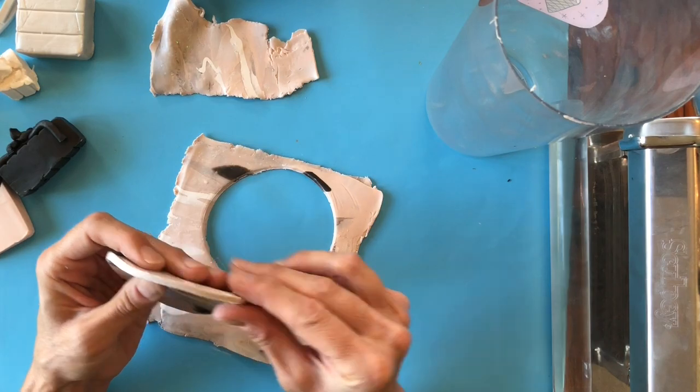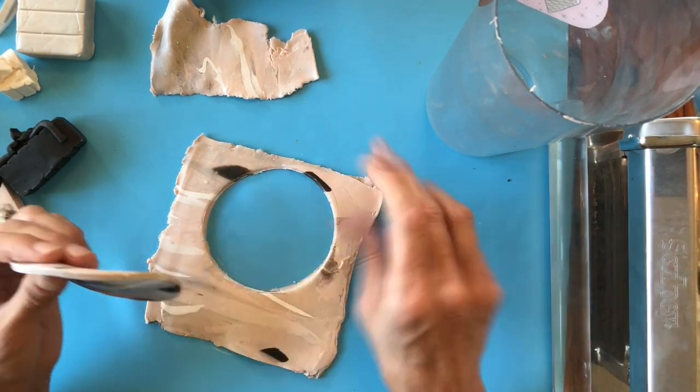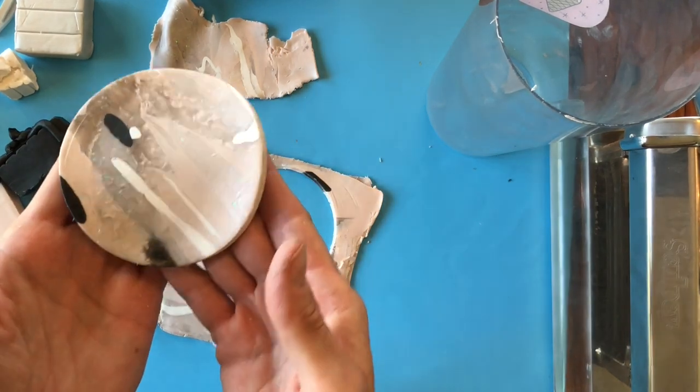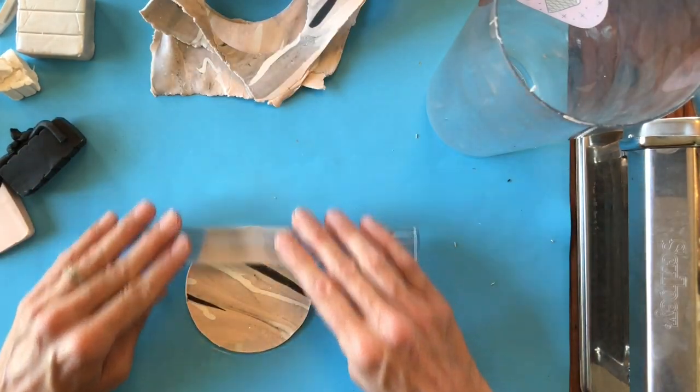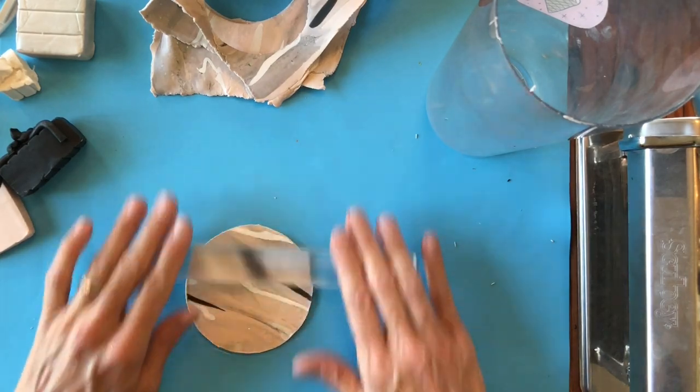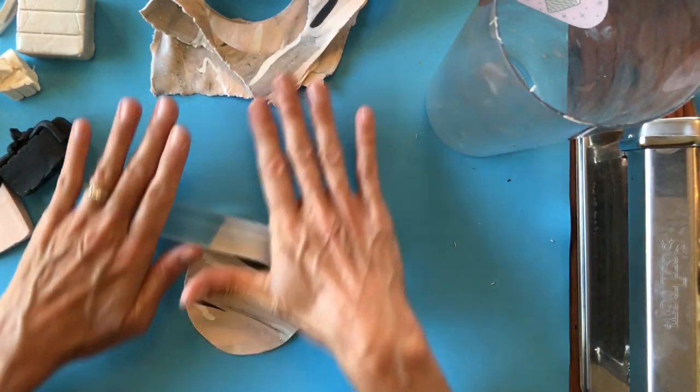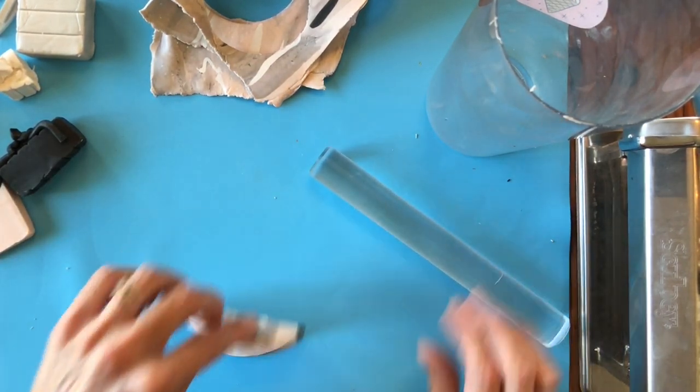I'm going to lightly sand the edges after they're baked so this is just a bit of prep work before sanding and I might just take my roller here and gently smooth out the bottom or the underside of the dish. Not really pushing down here just smoothing the edges.